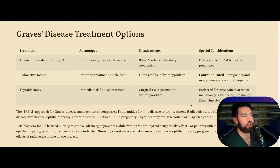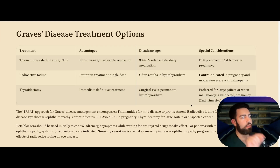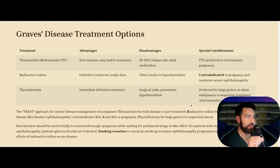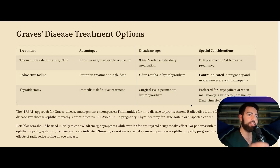Graves disease — important for ophthalmopathy. Smoking cessation is crucial. Radioactive iodine is contraindicated in moderate to severe ophthalmopathy and also contraindicated in pregnancy. Methimazole is the drug of choice for the general population. PTU is preferred in the first trimester of pregnancy. Thyroidectomy is used in pregnancy — usually in the second trimester — if the patient has a large goiter with compressive symptoms or when there is high risk for malignancy.